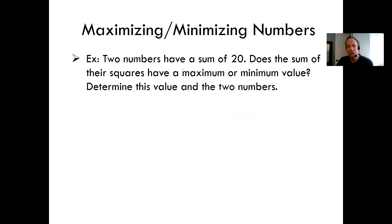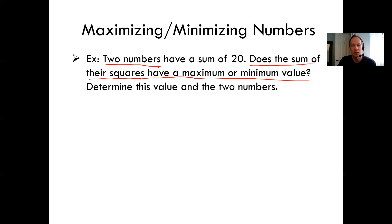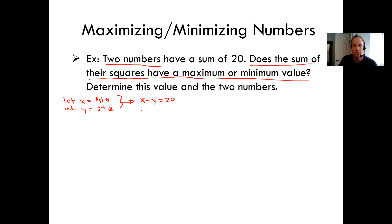Here's a classic textbook question: two numbers have a sum of 20. First, does the sum of their squares have a maximum or minimum value? Second, determine this value and the two numbers. Let x equal the first number and y equal the second number. We know x plus y equals 20. The sum of their squares would be x squared plus y squared. Let S equal the sum of squares.